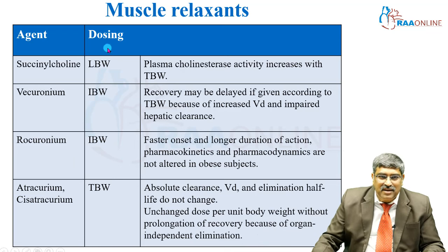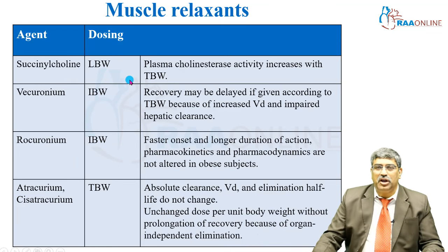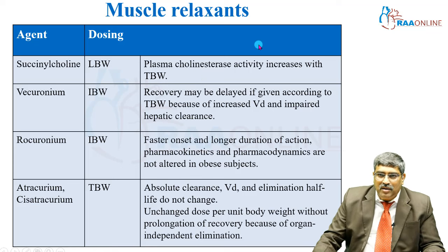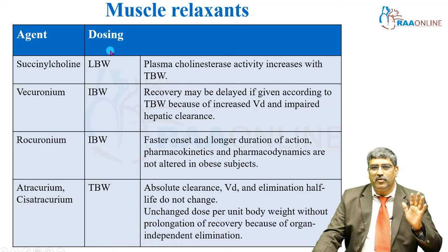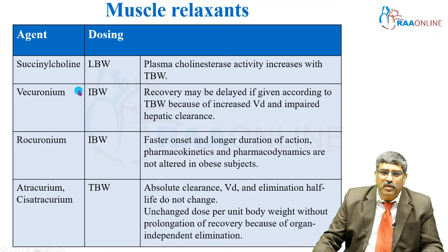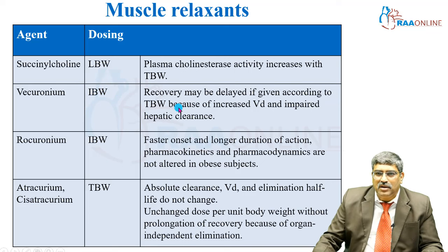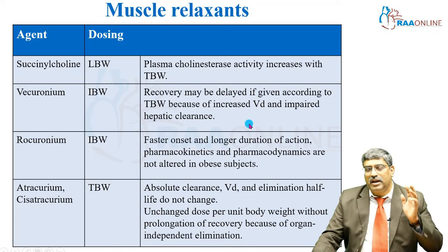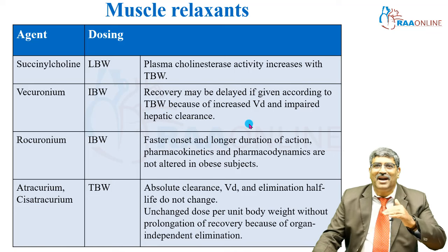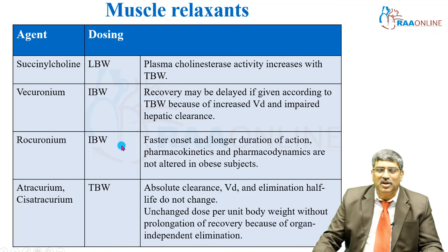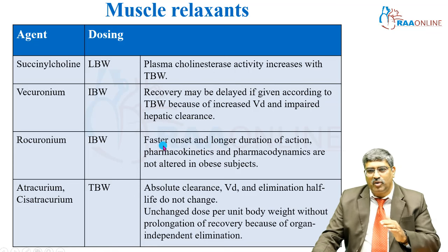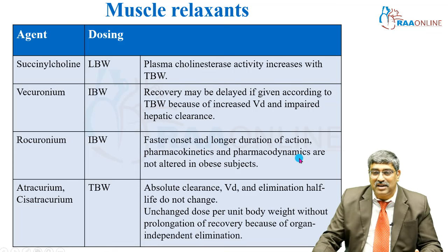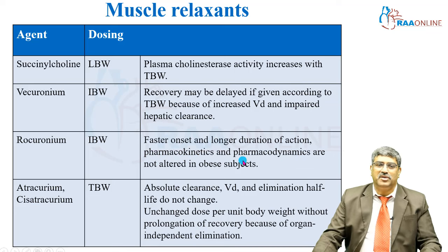Coming to muscle relaxants — succinylcholine: use lean body weight, as plasma cholinesterase activity increases with total body weight. Vecuronium: use ideal body weight; recovery may be delayed if given by total body weight due to increased volume of distribution and impaired hepatic clearance. Rocuronium: use ideal body weight; faster onset, longer duration of action, and its pharmacokinetics and dynamics are not significantly altered in obese patients, making it an ideal choice.